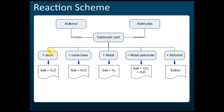There are five reactions of carboxylic acid. Carboxylic acid reacts with alkali to give salt and water. Carboxylic acid with oxide base also gives salt and water — both are neutralizations. Carboxylic acid with metal gives salt and hydrogen gas. With carbonate, you get salt, carbon dioxide, and water. And carboxylic acid with alcohol gives ester — this is called esterification.